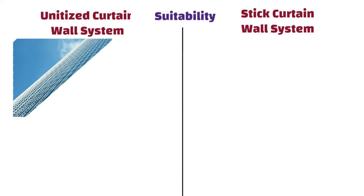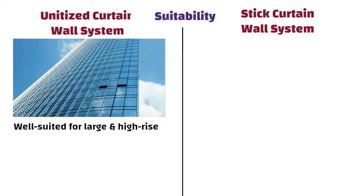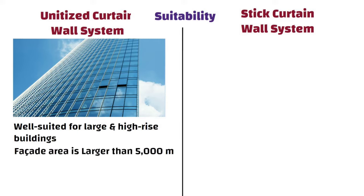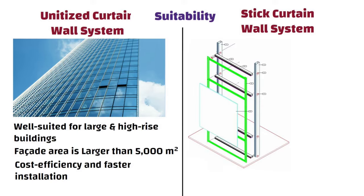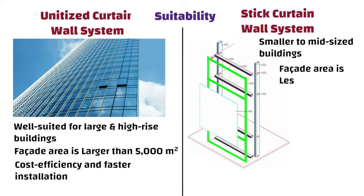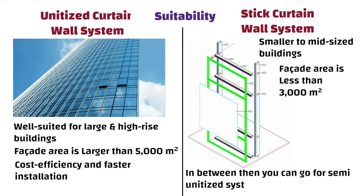Suitability: Unitized systems are well suited for large and high-rise buildings because they can be assembled off-site and installed quickly. If the facade area is larger than 5000 square meters, then choose a unitized system for cost efficiency and faster installation. Stick systems are often used in smaller to mid-size buildings. If the facade area is less than 3000 square meters, opt for the stick curtain wall system. If the area is in between, then you can go for a semi-unitized system.